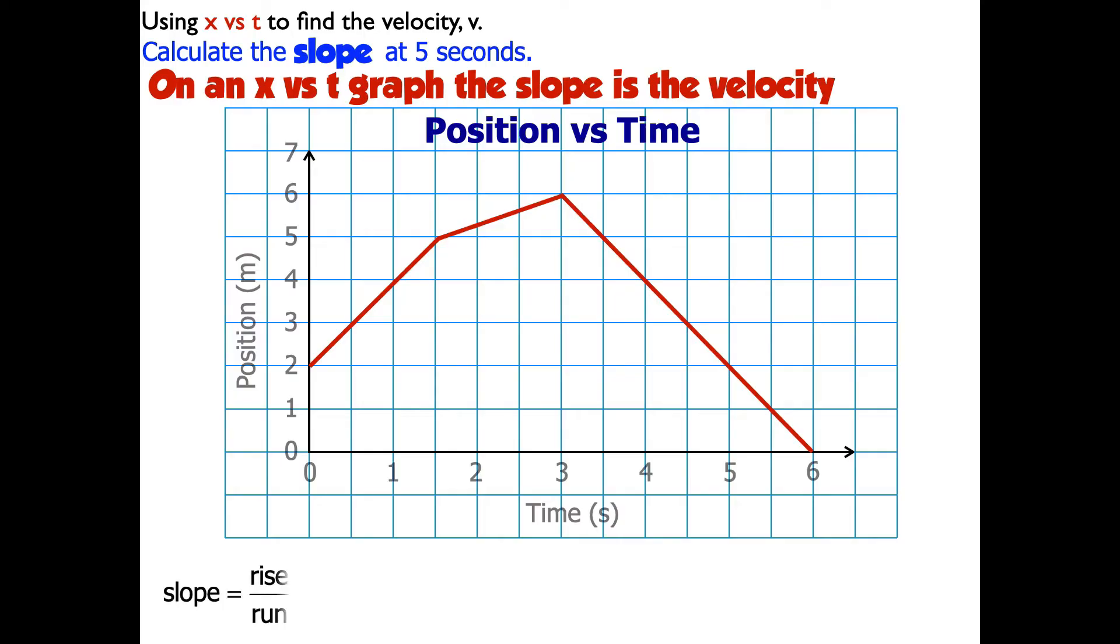Slope is rise over run. So on this graph, that's going to be the displacement divided by the change in time. So at 5 seconds, I'll go up to hit the curve, and I can see that I have a dot on this straight line.